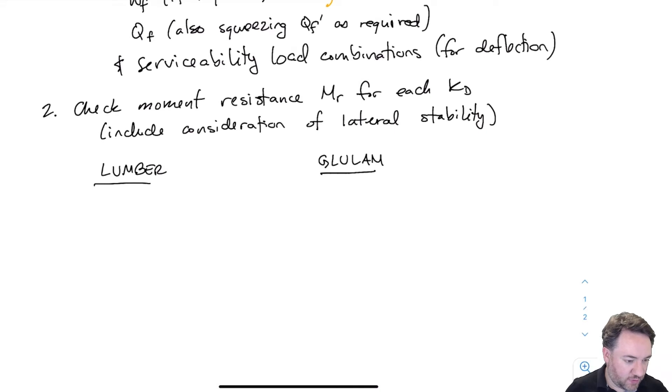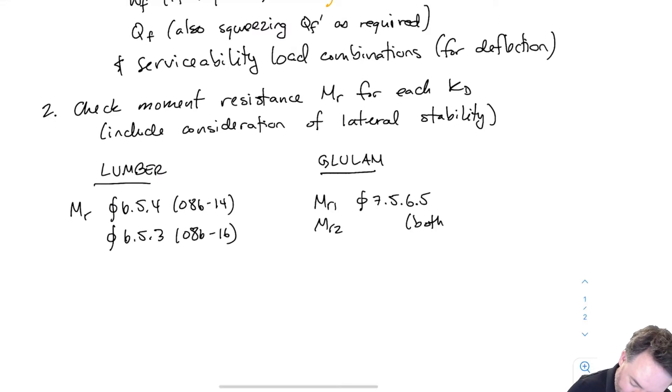So for each of these, I'm going to show all of the things that we need to calculate for both lumber and glulam. Often there is overlap between the two. So when I'm checking for moment resistance, I have two slightly different approaches for lumber and glulam. For lumber, I just check MR. And for glulam, I have an MR1 check and an MR2 check. One of them which considers lateral stability and one of them which considers size effect. And there are the relevant clauses.